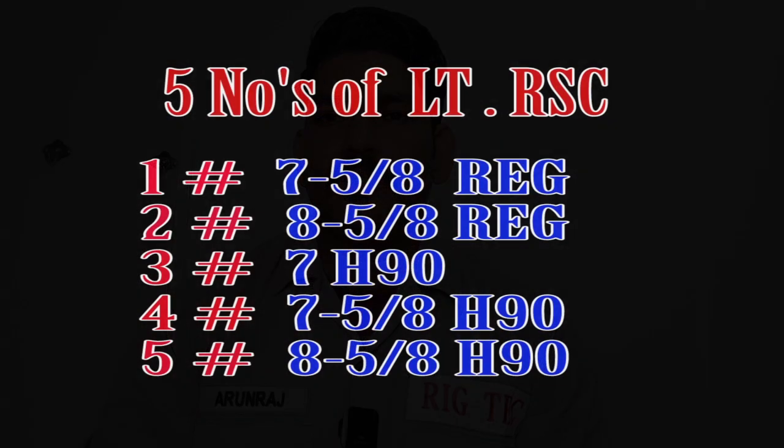Normally, load torque modification comes with 7-5/8 regular, 8-5/8 regular, 7 H90, 7-5/8 H90, and 8-5/8 H90. These are the 5 API connections: 7 H90, 7-5/8 H90, 8-5/8 H90, 7-5/8 regular, and 8-5/8 regular. These are the API recommended modified connections.